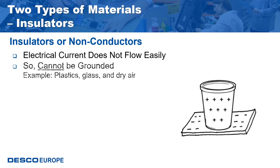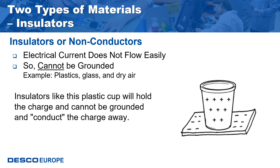The other type of material are insulators, sometimes referred to as non-conductors. They do not allow electrical current to flow easily, so they cannot be grounded. Examples are plastics, glass, and dry air. Insulators, like the cup shown in the graphic, will hold a charge and cannot be grounded to conduct the charge away.